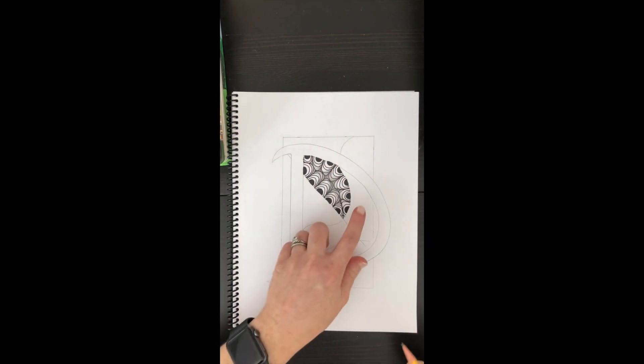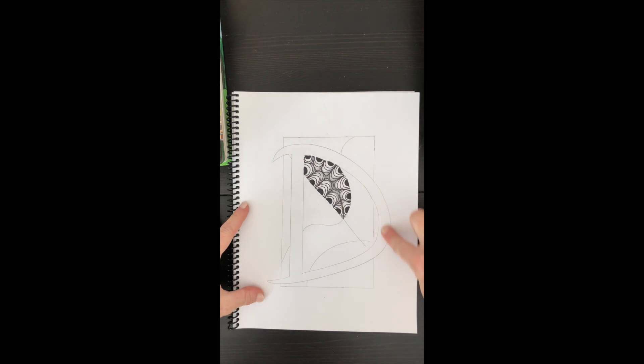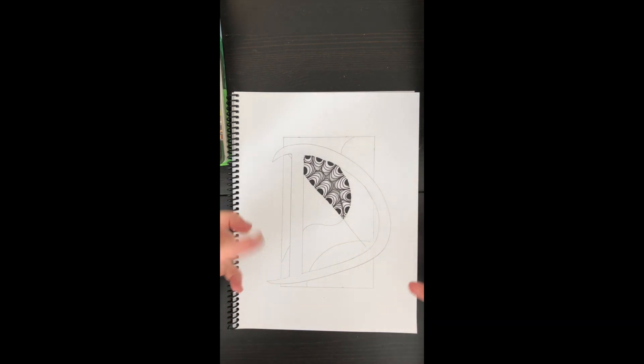And now guys, in each of your other sections, you can pick a different zentangle design to put in each of these. And then in the end, our letter is going to show up really bright because everything else is going to be filled with zentangles.